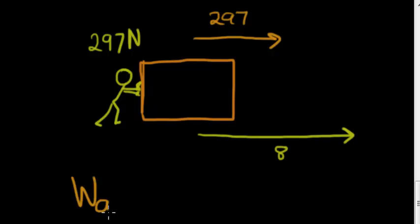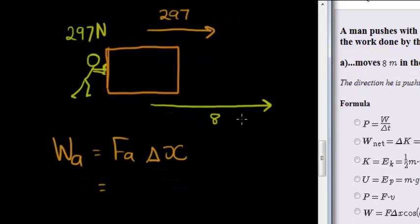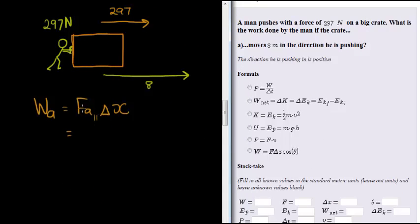What is the work done by the man? The applied work done by the applied force over the distance. Now we know that the applied force only does work in the direction of motion, so we need the force that is parallel to the motion. But this time, the whole force is parallel to the motion.